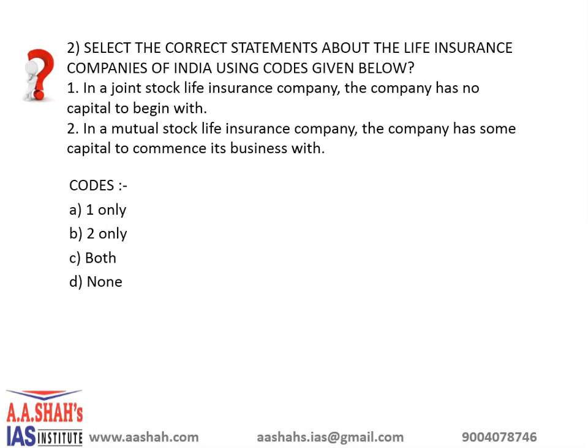Select the correct statement about the Life Insurance Company of India. First: in a joint stock life insurance company, the company has no capital to begin with. Second: in a mutual stock life insurance company, the company has some capital to commence its business. The codes are A: 1 only, B: 2 only, C: both, D: none.